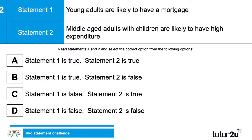Next true or false statements. Statement one: young adults are likely to have a mortgage. Statement two: middle-aged adults with children are likely to have high expenditure. What's the combination? Getting a real mixture here — general consensus is C. And it is indeed C.